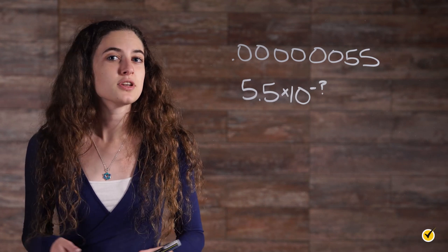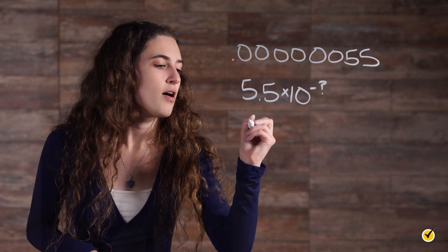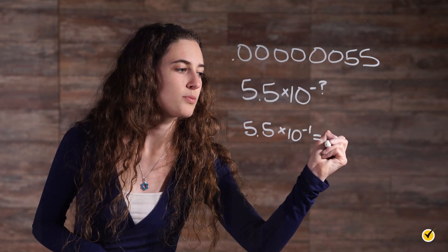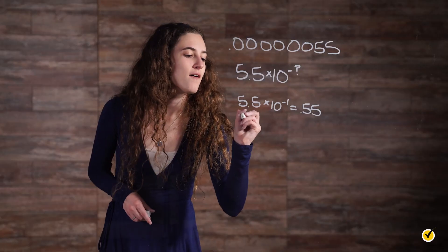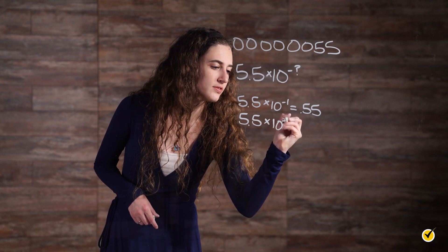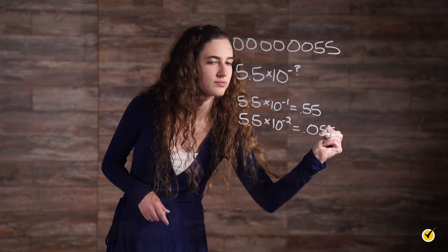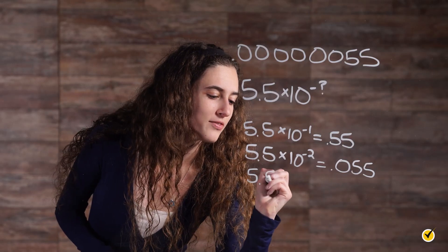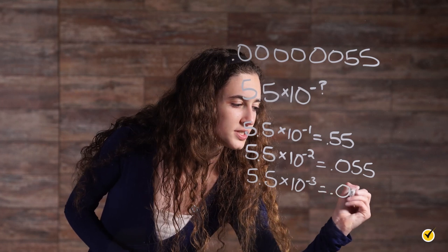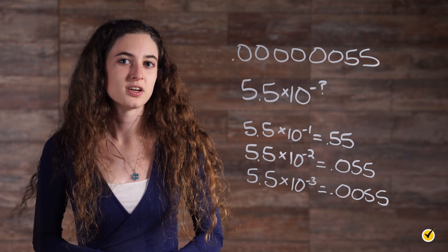Now, we count the number of times our decimal is divided by 10. 5.5 times 10 to the negative 1 is equal to 0.55. 5.5 times 10 to the negative 3rd power is equal to 0.0055. And so on and so on until we reach negative 7th power.